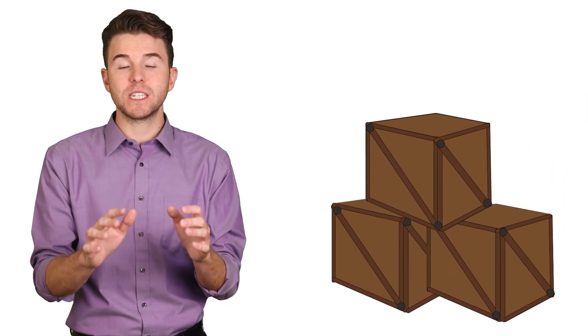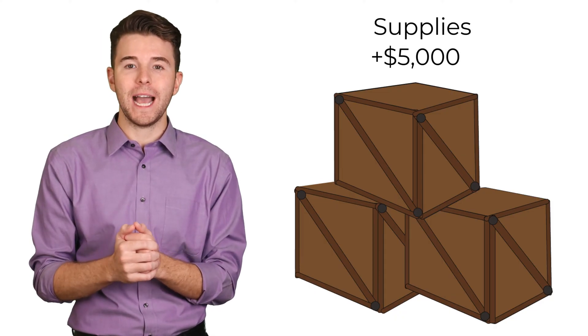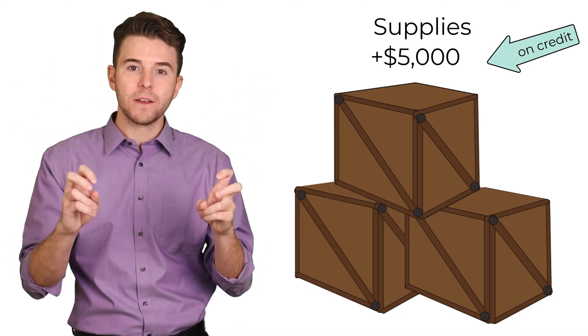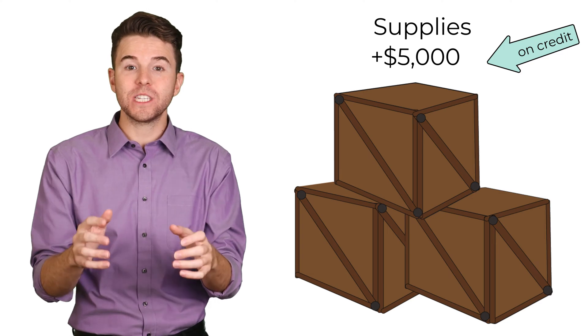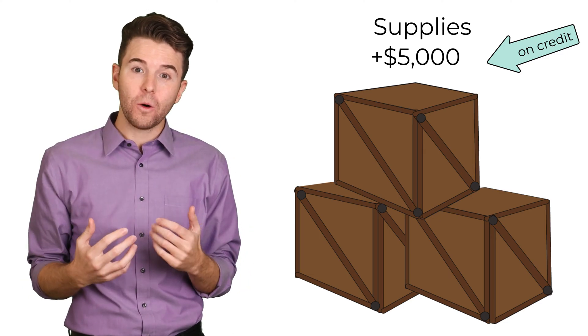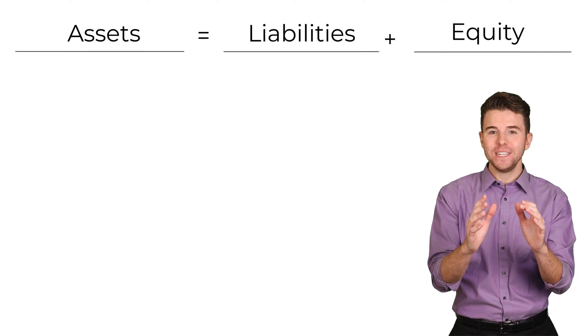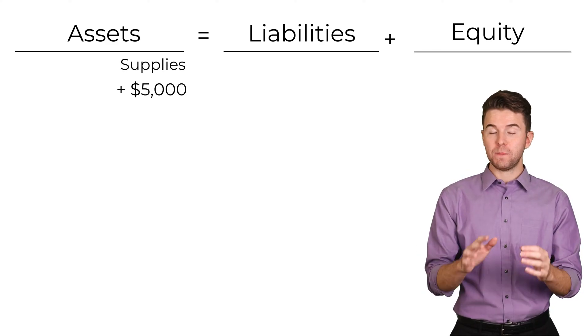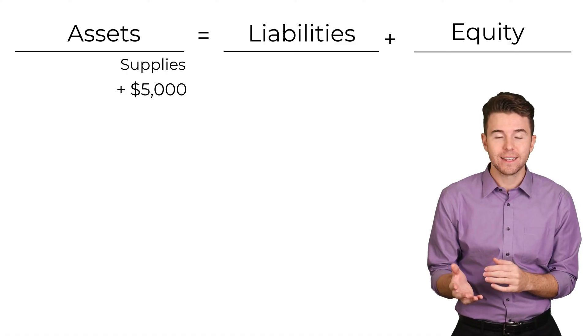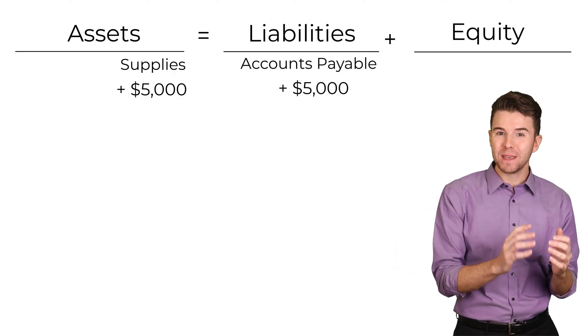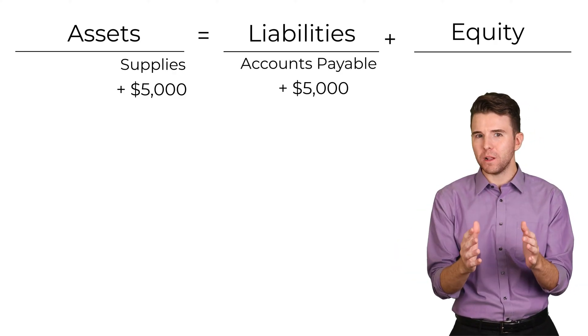After the investment, the first order of business is to purchase supplies. In our case, the business purchases $5,000 of supplies on credit. This means that the supplies are received right now, but we will pay for them later. Using the accounting equation, we increase assets by $5,000 under supplies and increase liabilities under accounts payable for $5,000.